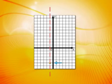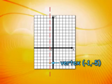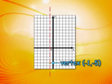We can indicate that on the grid. We mark the vertex as negative 1, negative 5. Now we have a starting point for our graph.